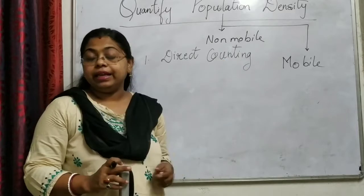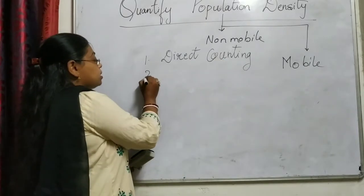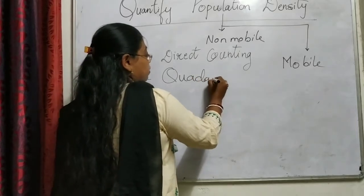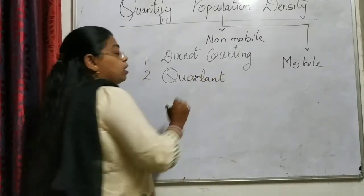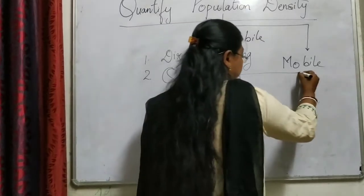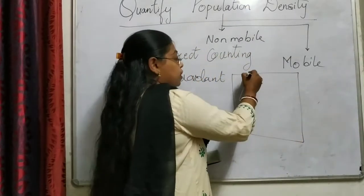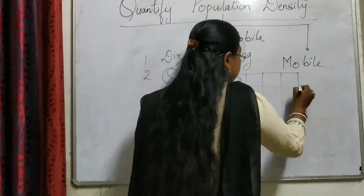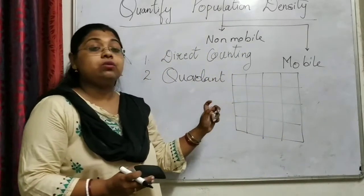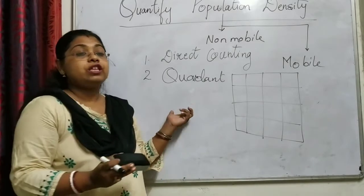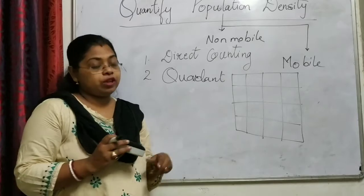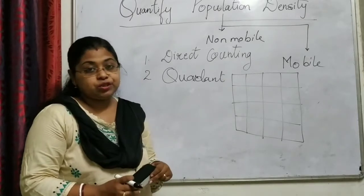The second method is with the help of a quadrat. We are using a quadrat — a square which has some markings or threads over it. This method is mainly used to quantify the varieties of grasslands, which are normally at a very ground level.